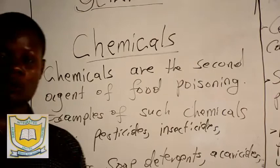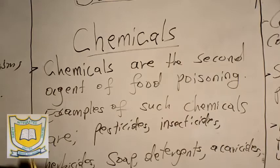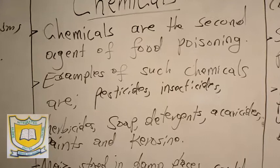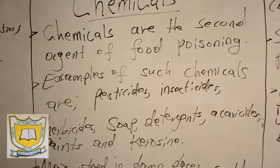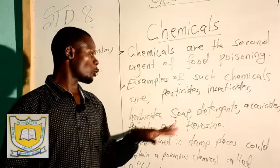How can chemicals cause food poisoning and which are some of these chemicals? Chemicals are the second agent of food poisoning. In our daily work at home we deal with chemicals to control one or two or three things, and in the course of dealing with such chemicals you find that they can get to food, and after being consumed, you find that the food has been poisoned.